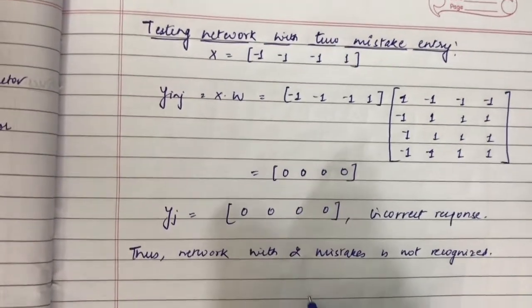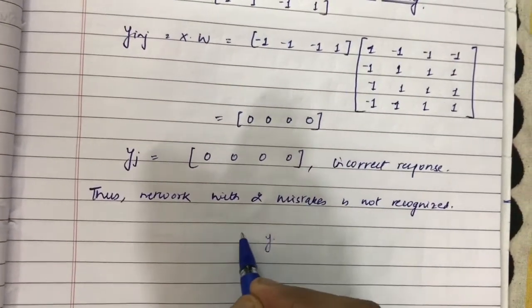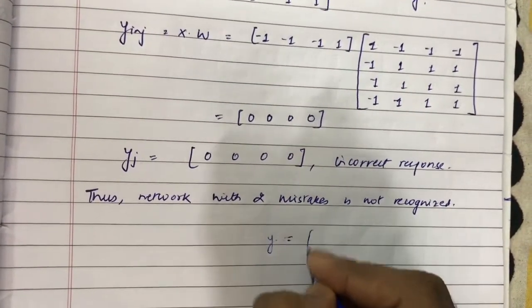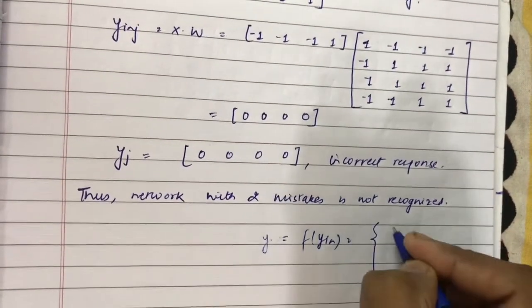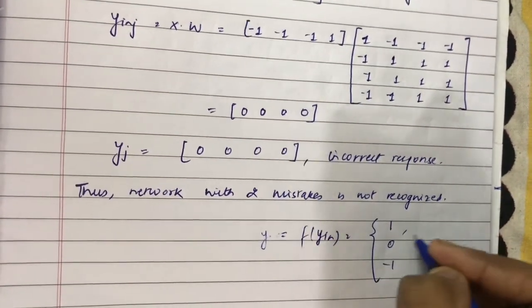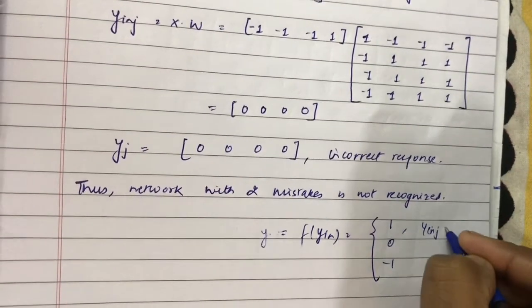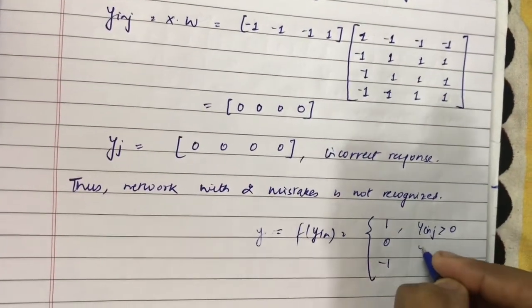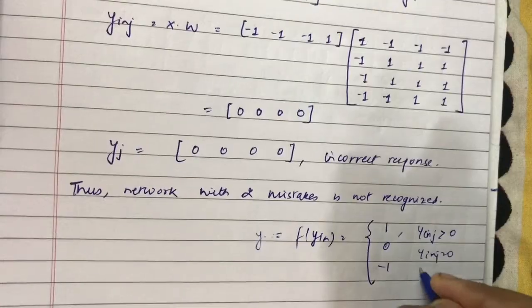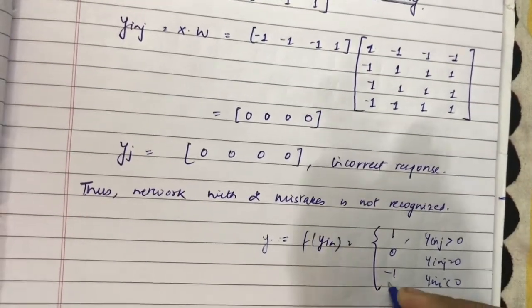The activation function used is y = f(y_n) = {1, 0, -1}, depending on the value of y_n,j. If it is greater than 0, it is 1; if it is equal to 0, it is 0; and if it is less than 0, it is minus 1.